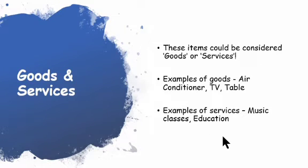These items can be considered as goods or services. For example, goods can include an air conditioner, TV, table, or chair. Services, on the other hand, can include giving music classes, coaching, and sports education. These are all things which come under services.